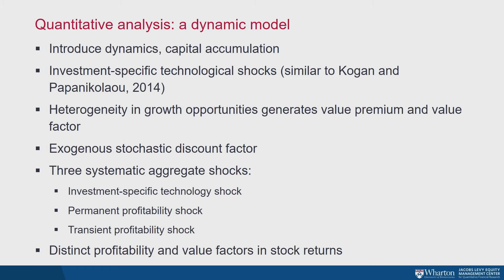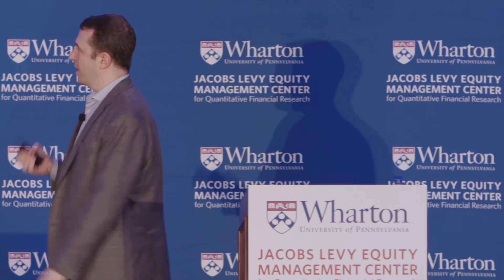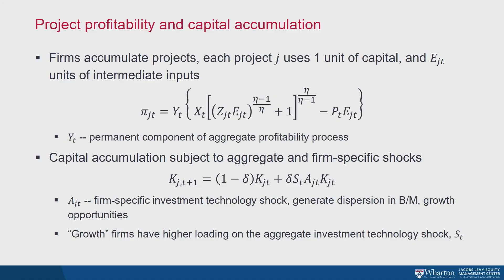We have three types of shocks in this model: investment-specific technology aggregate shock, a permanent profitability shock, and a transient one. Adding two more shocks relative to the static model gives us two different factors in the cross-section of firms — a value factor and a profitability factor. This equation describes the production function of a single productive project. Firms accumulate many of these projects. Each project uses a single unit of capital, uses intermediate inputs E that the firm optimizes period by period.